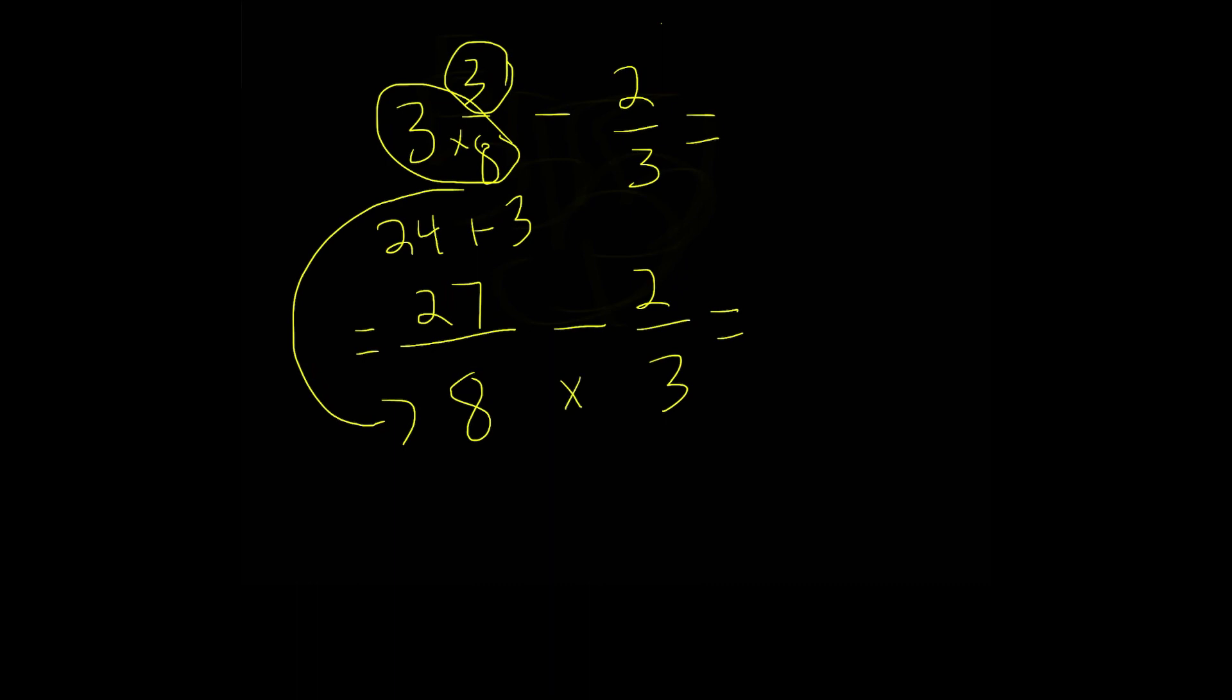8 times 3 is 24. 27 times 3 is 81 minus 2 times 8 is 16. And this is equal to 81 minus 16. That's 64.